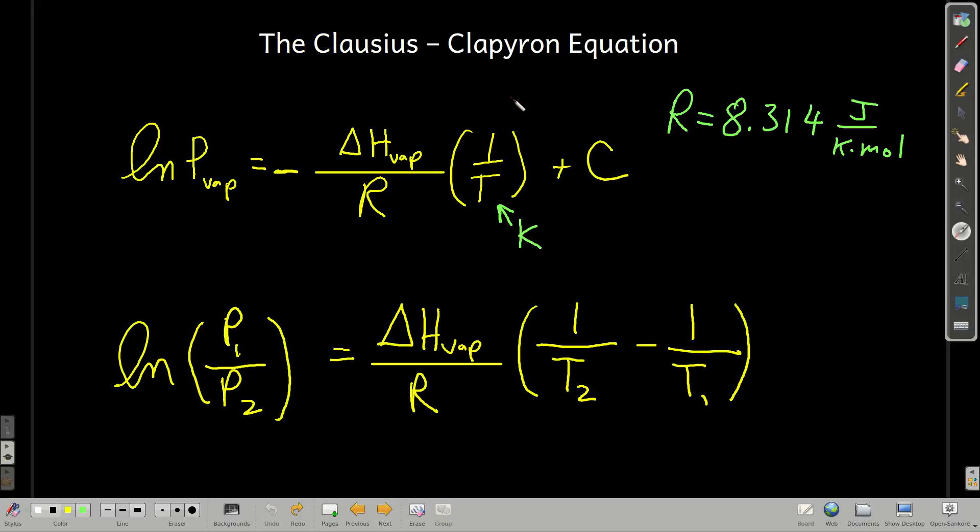Now, we have the Clausius-Clapeyron equation. This useful equation relates the vapor pressure of a liquid at a certain temperature to its heat of vaporization. This form of the Clausius-Clapeyron equation is the equation of a straight line, y equals mx plus b, where y would be the natural log of the vapor pressure. The slope of the line, m, would be negative ΔHvap over R. R is 8.314 joules per kelvin mole, one of the forms of the gas constant, times 1 over T, which is x. T has to be in kelvin, and the y-intercept would be some constant.